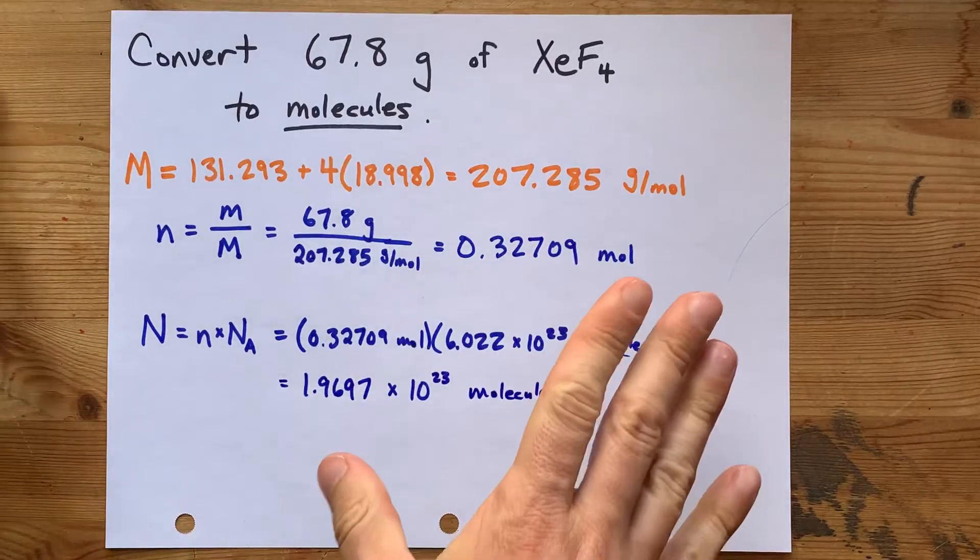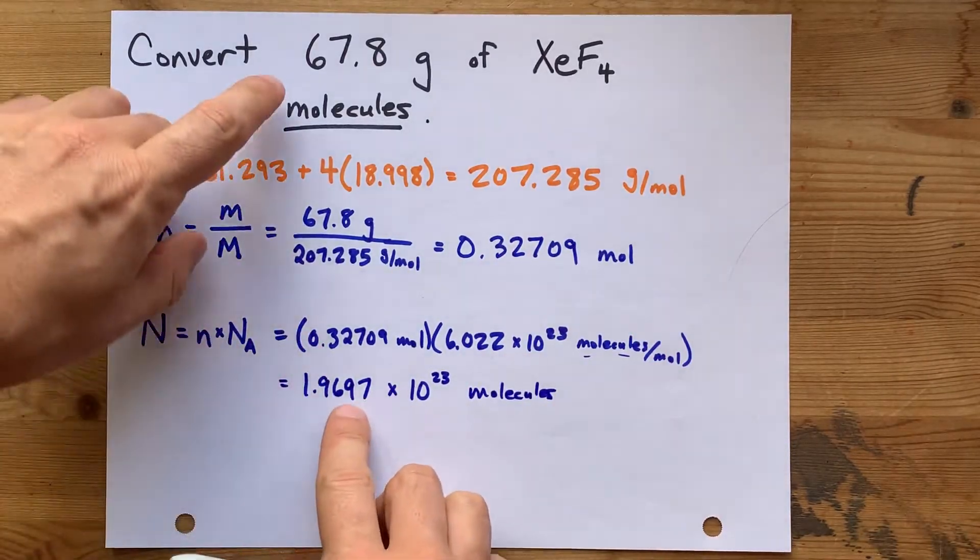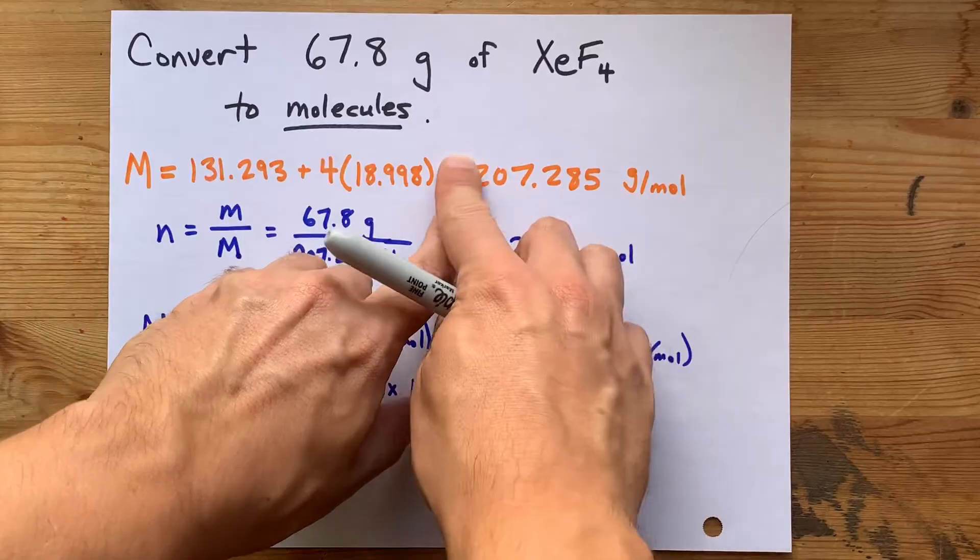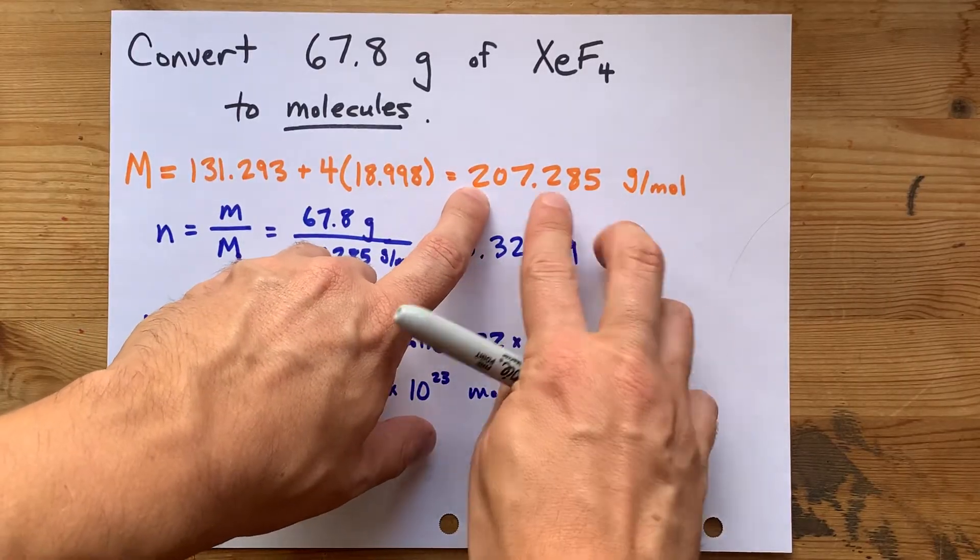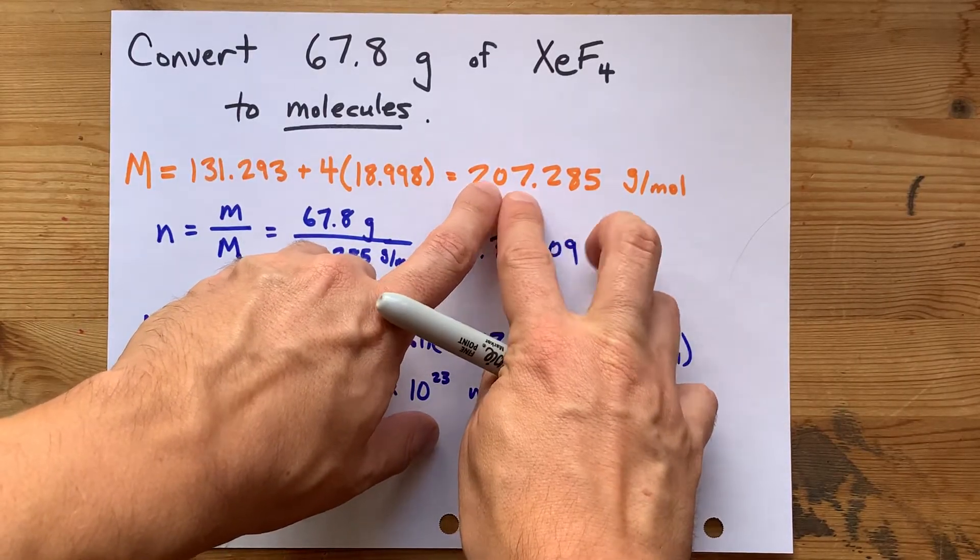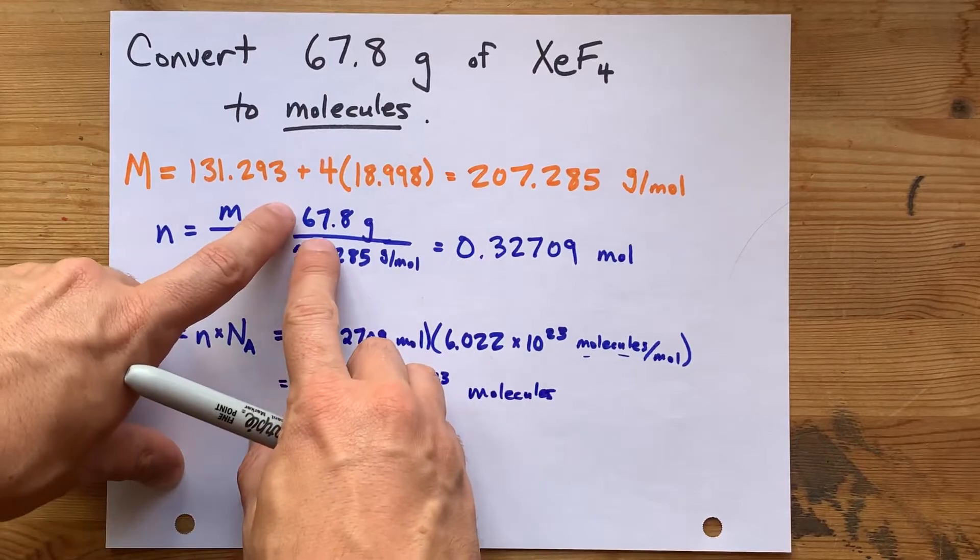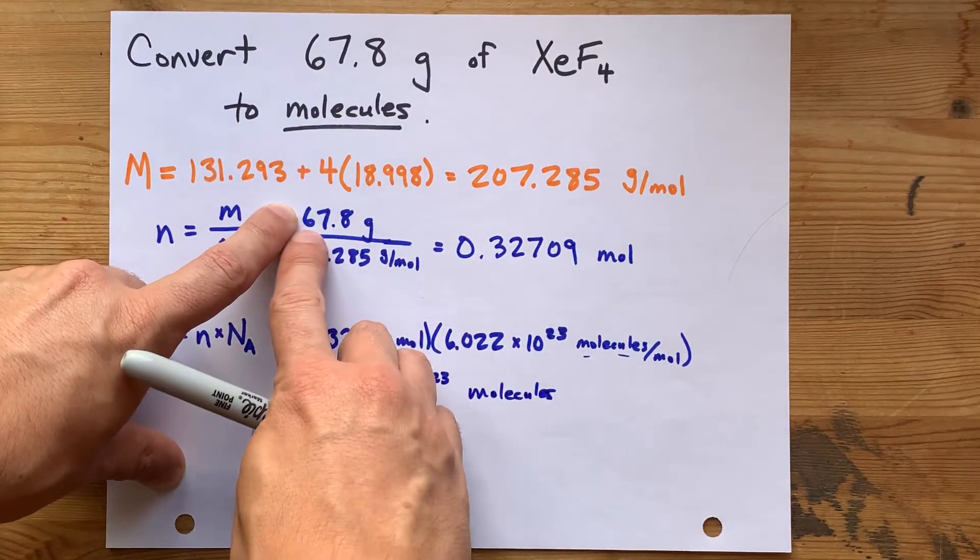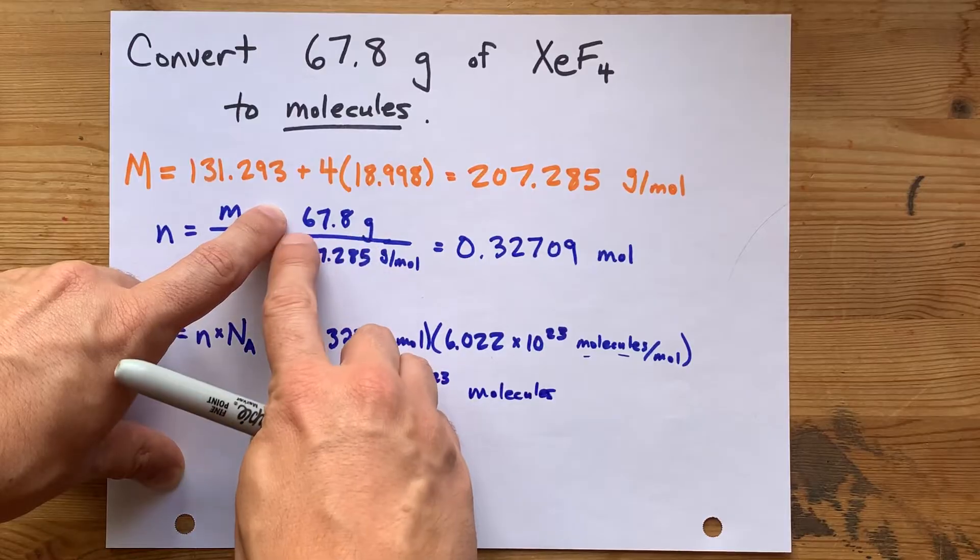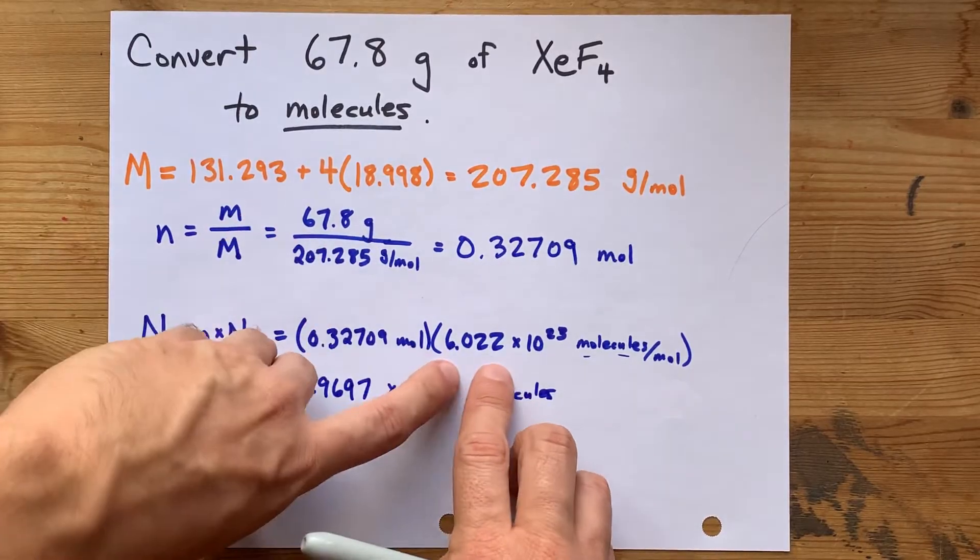But again, I'm going to do significant figures for you. So, this number, the molar mass, had six significant figures. Because remember, we used three decimal places. That's a lot. Let's compare it to 67.8, another number we were given. That only has three significant figures. One, two, three.